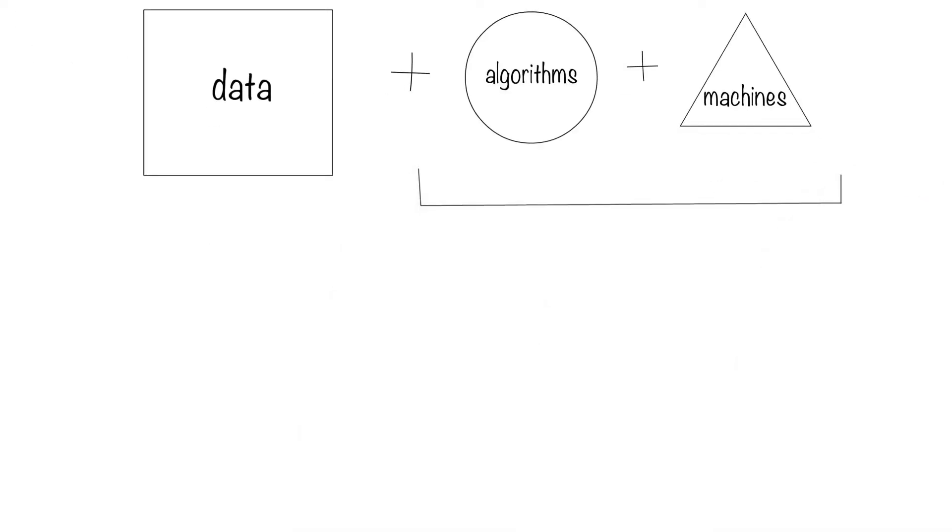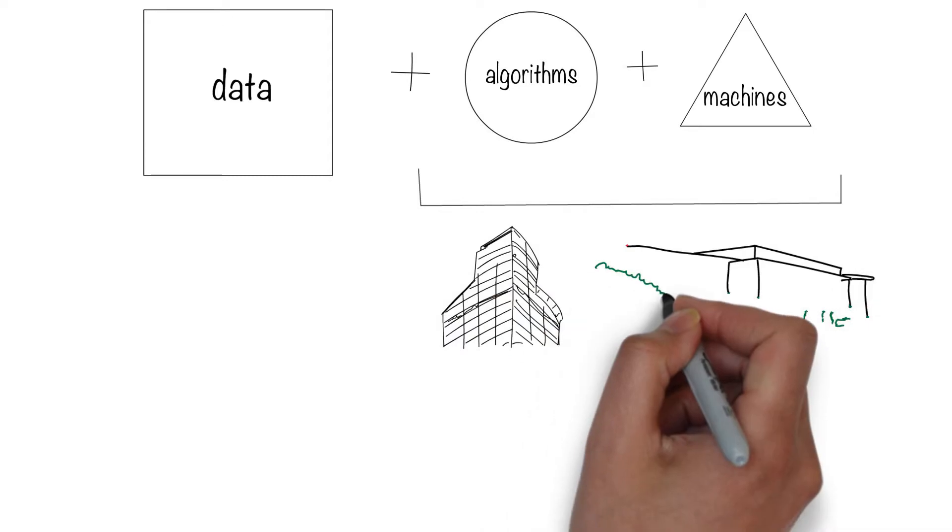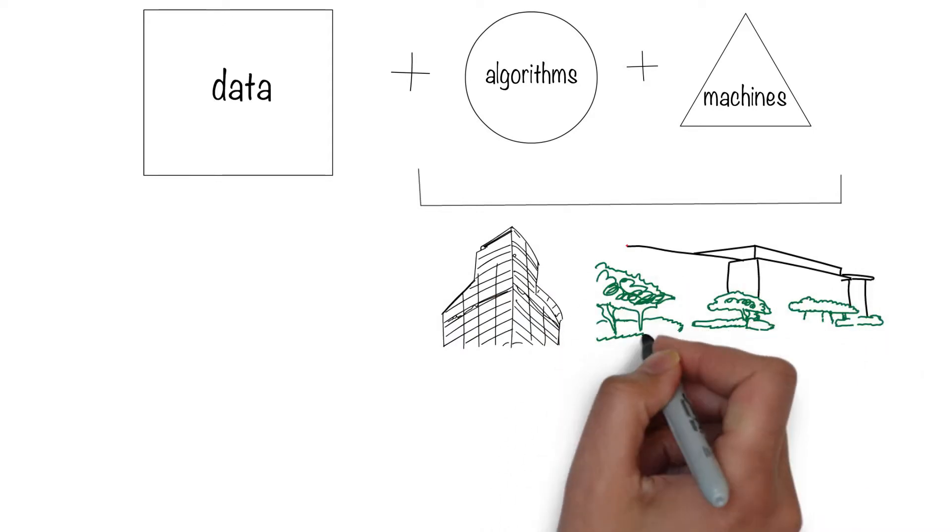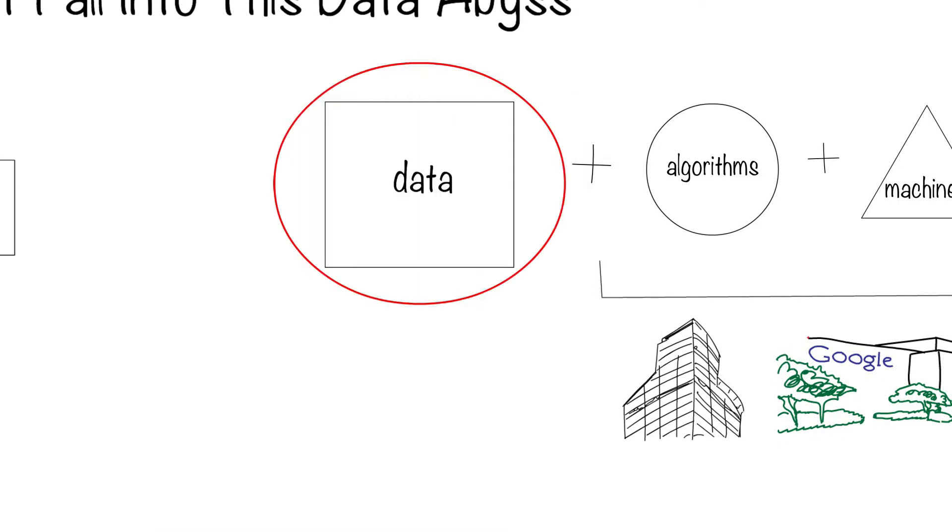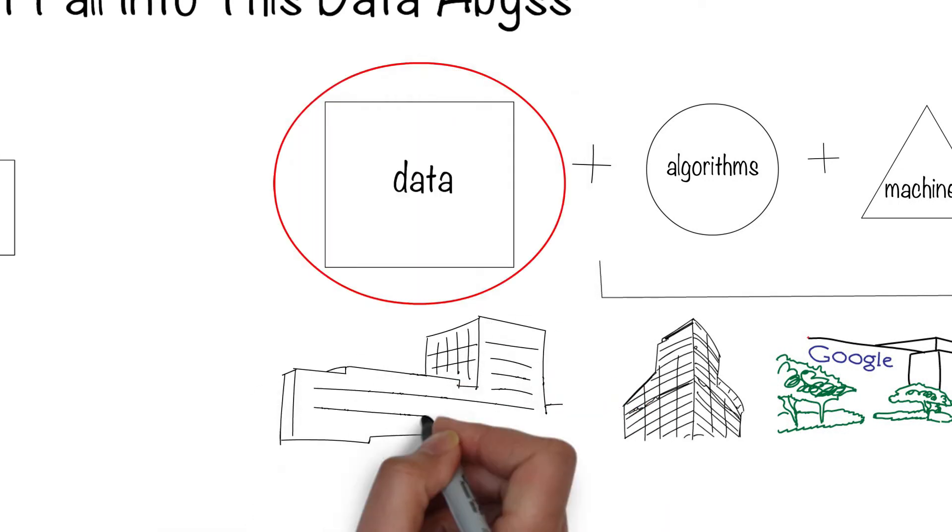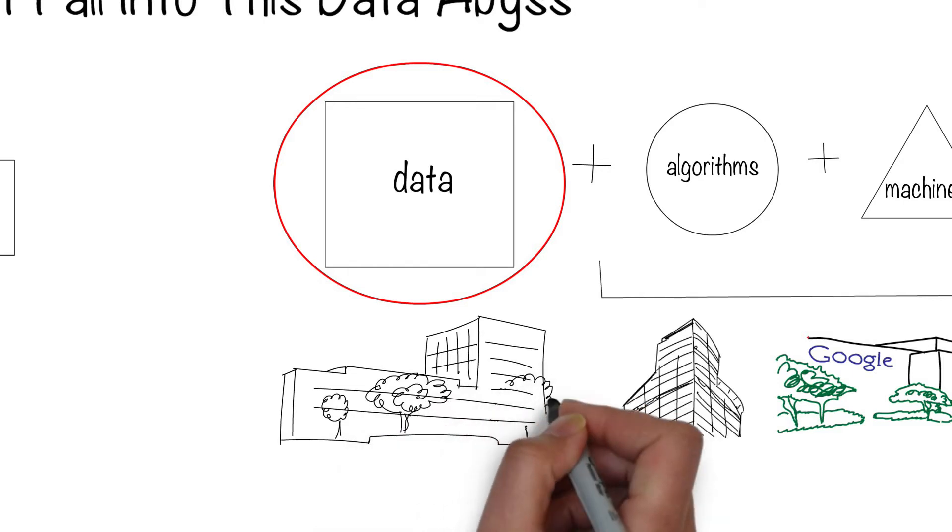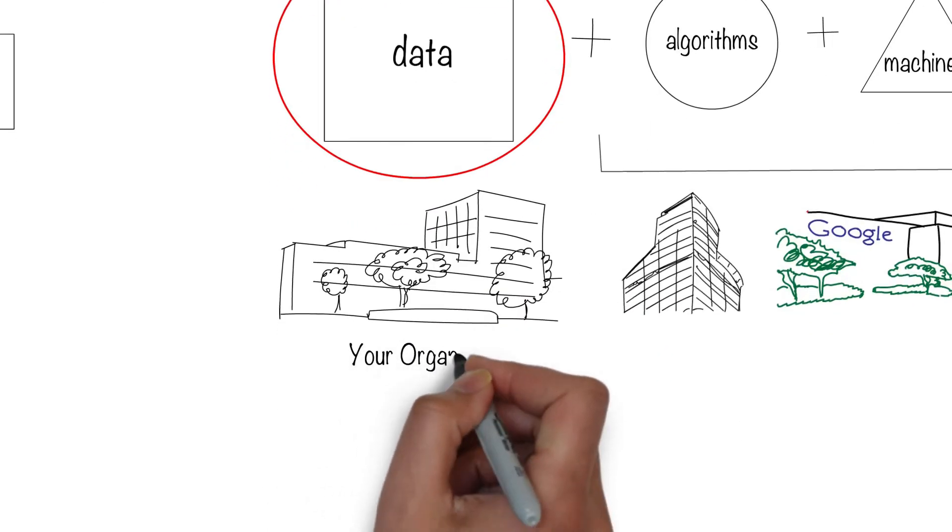The algorithms and the machines can be provided by any one of the many partner companies including Amazon and Google. But the data to train these machines have to come from your organization. And hence the data is the most important and is your organization's competitive advantage.